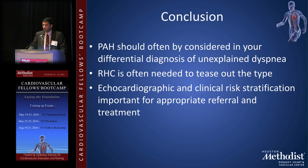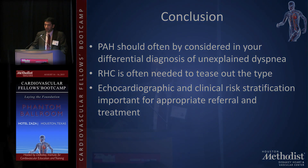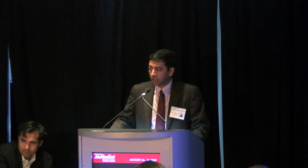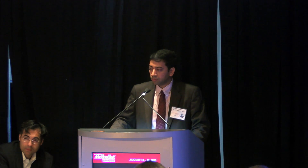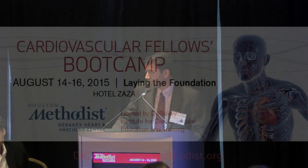In conclusion, pulmonary hypertension should be considered often in the workup of unexplained dyspnea. Right heart catheterization is essential to identify the cause. Risk stratification and early referral to a PH treatment center are critical to optimal patient care.